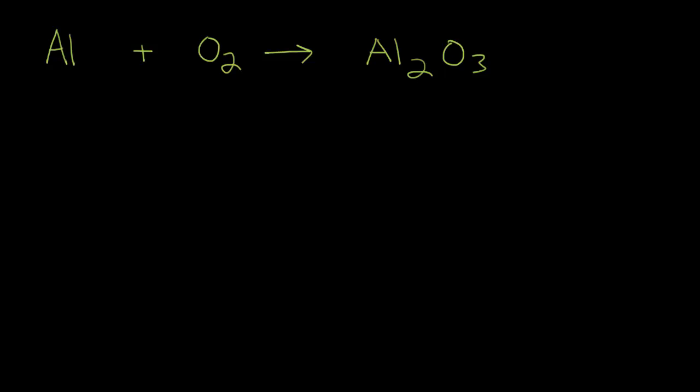So we're going to start by adding a variable in front of each molecule. So we're going to put an A in front of the Al, a B in front of the O2, and a C in front of the Al2O3. So what we're going to do is write a series of equations for each atom in the chemical equation above. We're going to count the number of atoms in each molecule, and that number will be our coefficient for each variable.